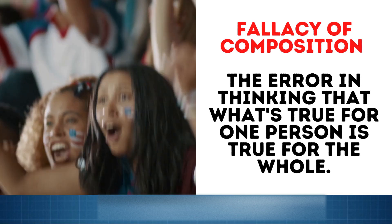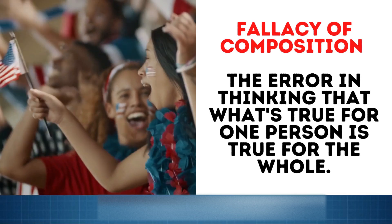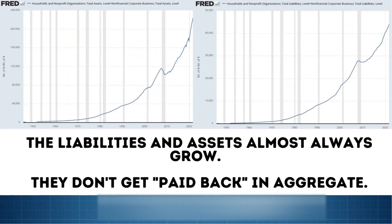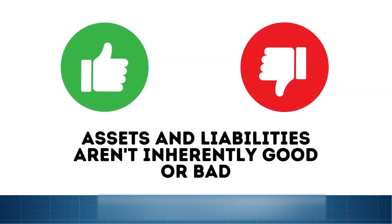In this case, we often imply that what's true of a household is true of an aggregate sector or even a government, and that's simply not true. For example, look at this chart of household and non-profit organizations' total liabilities compared to total assets. You'll notice that they always go up in the long run, because while the liabilities grow, the assets also grow. In other words, they don't get paid back — in fact, they can't get paid back, because then there would be no assets or liabilities inside of the whole economy. People often look at the liability side and debts and assume that this is all bad, but remember that liabilities also have corresponding assets. It's not that assets and liabilities are necessarily or inherently bad — it really depends on what they're used for in the long run.